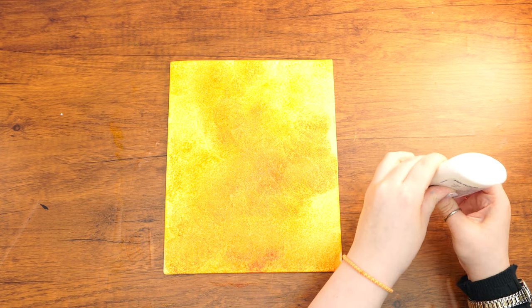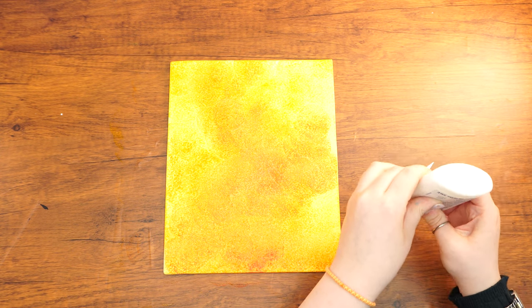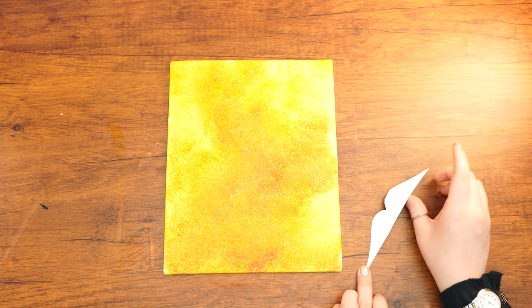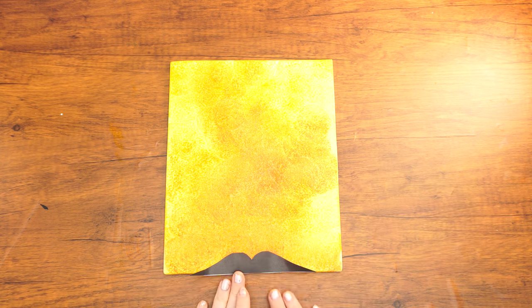Glue the open book onto the bottom of your canvas. This is not just any book, but a book of Torah. Now, add all of these letters coming out of the book to represent all the Torah, especially the Torah secrets that Rashbi revealed to the world.